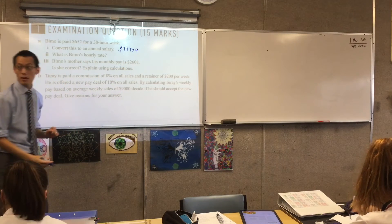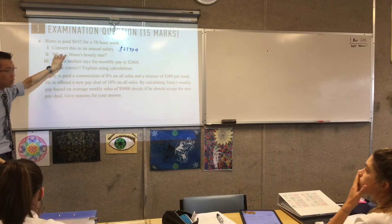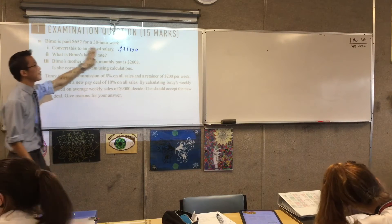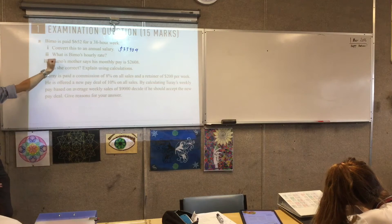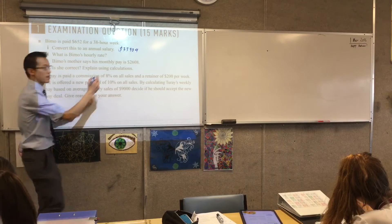33,904. Okay, are we happy with that? Yep, and how did that number arrive? Where did you get it from? Okay, good. Just this, 52 times, will give you that number. His hourly rate, his hourly rate, what did you get for that? 17.16.